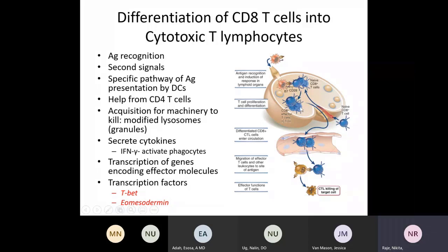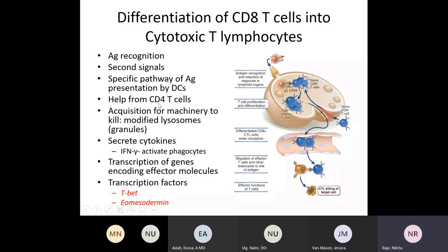Once those effector T cells are formed, they exit the lymph node, get into the circulation, and migrate to the site of infection where they interact with cells that are damaged or infected with intracellular organisms such as viruses, and then killing of that cell occurs. When we talk about CD8 cells, the antigen presenting cells — such as dendritic cells — also need help from CD4 cells or helper T cells. Helper T cells help the process of activation or differentiation of CD8 cells, helping them acquire the machinery important for killing.